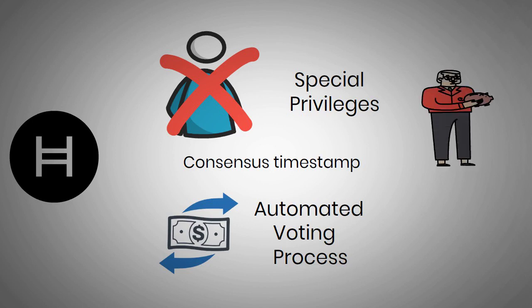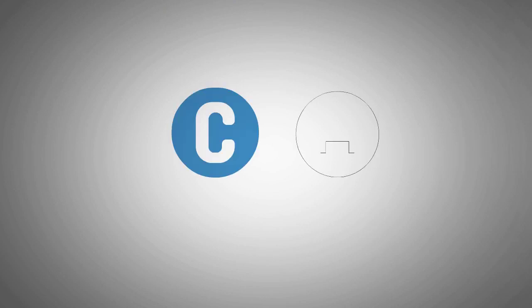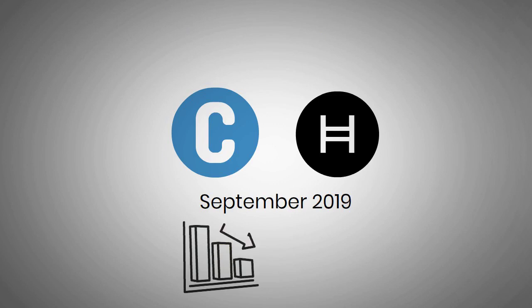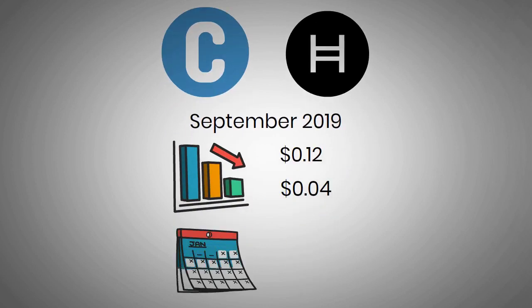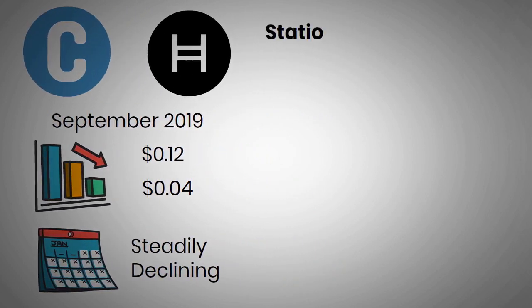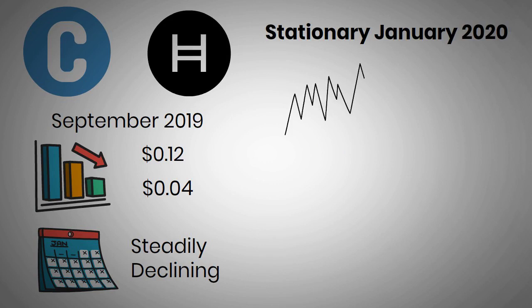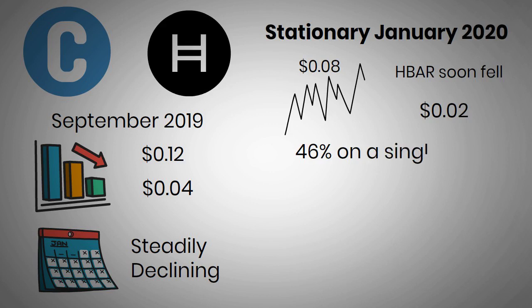HBAR was sold to investors through an ICO in August 2018. The cryptocurrency eventually hit the market with the Hedera mainnet in September 2019. It quickly fell from its ICO price of $0.12 and was worth less than $0.04 by the end of the first month. The rest of the year showed a similar downward trajectory, with HBAR steadily declining to $0.01 by the end of 2019. After a fairly stationary January 2020, a sudden surge in the middle of February took prices up to a peak of over $0.08. However, this was short-lived as HBAR soon fell to a low of under $0.02, following a crash of 46% on a single day in March.